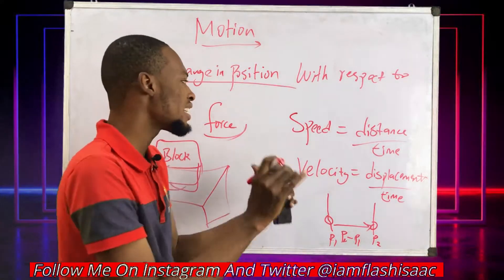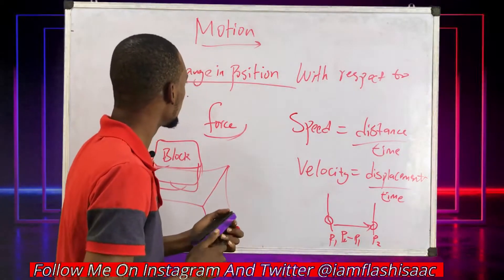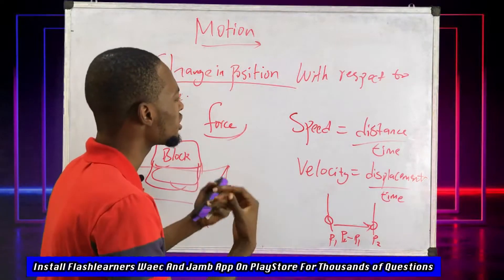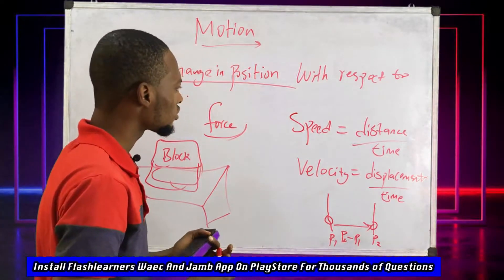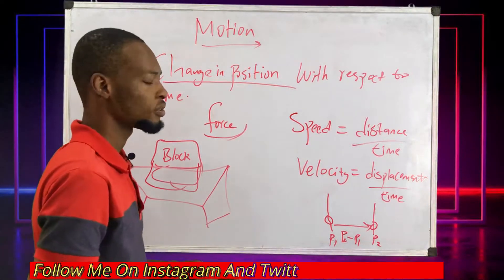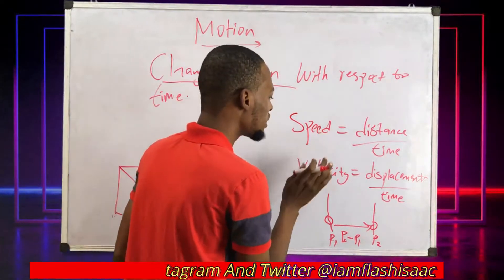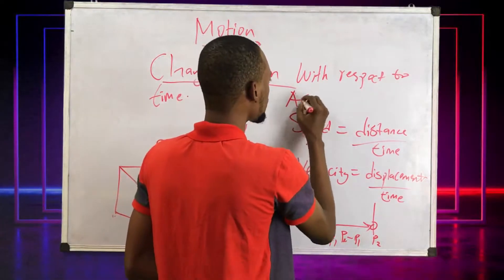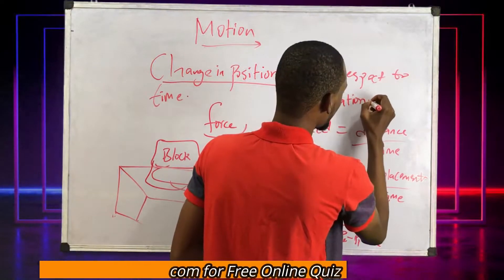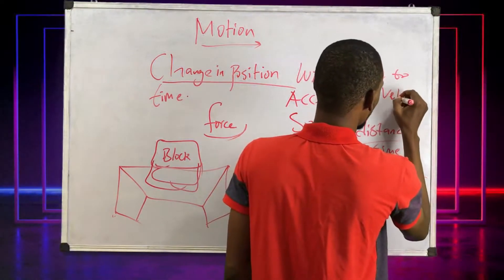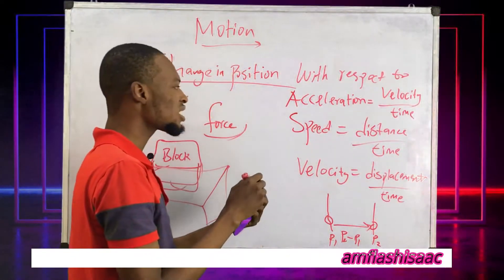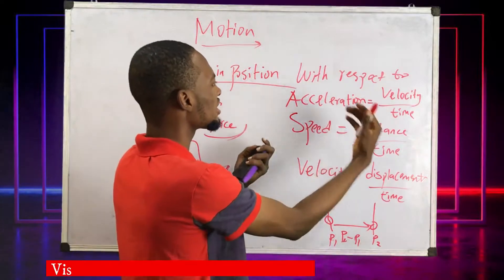There's something called earth rotation and earth revolution. Now forces make objects move or cause objects to be in motion. There are different types of motion. Before then, we have speed, velocity, and another thing associated with motion is acceleration. Acceleration is change in velocity over time. You see, we relate all these things with time.